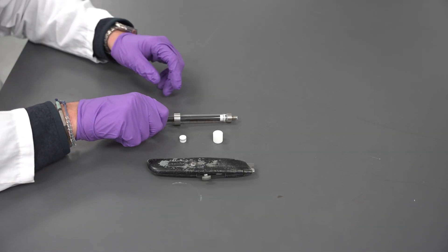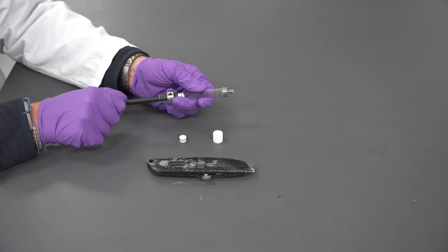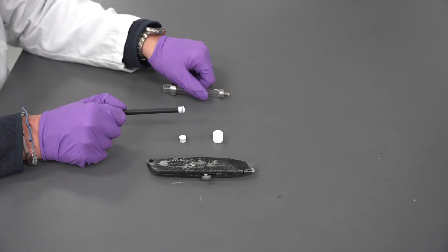Pull the black plunger out of the barrel of the syringe and use the razor knife to cut the old plunger tip off the plunger.